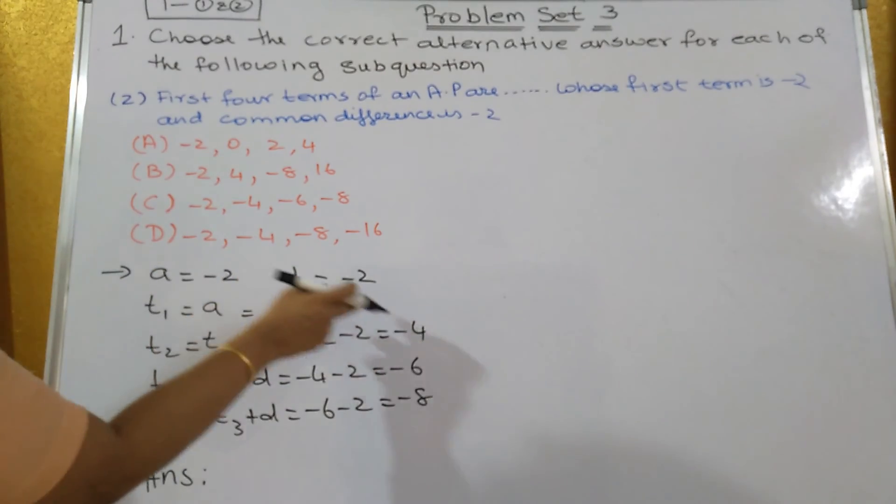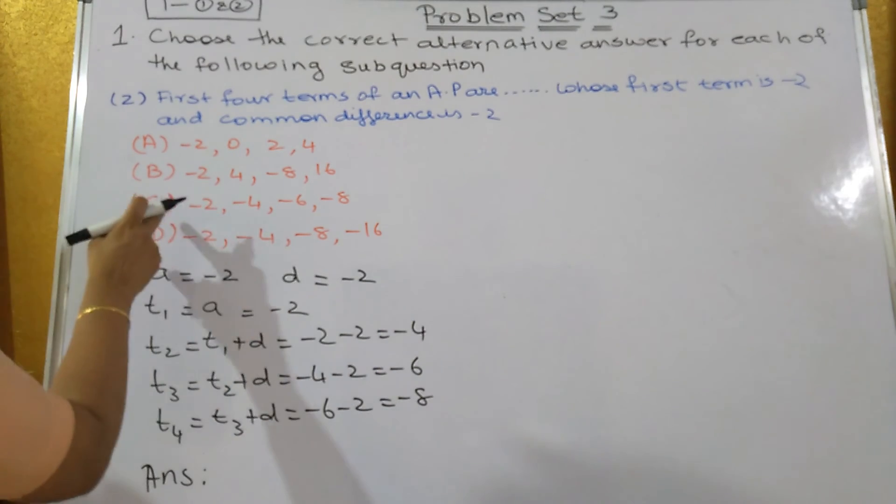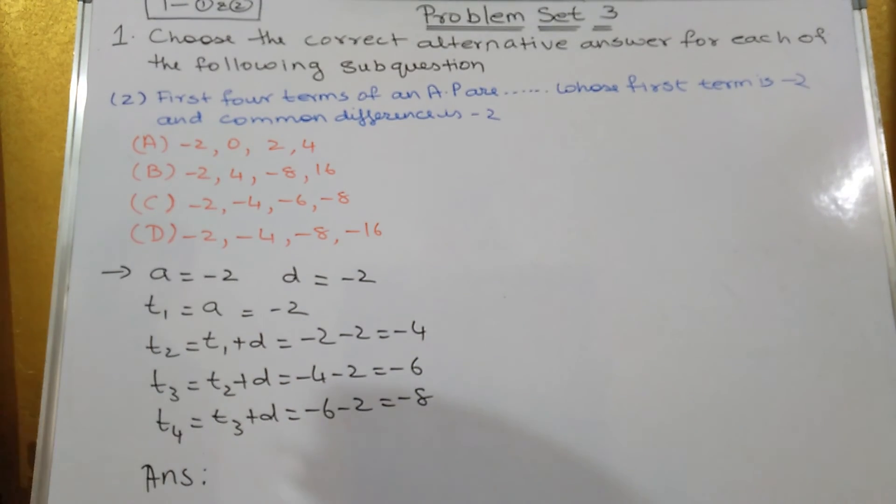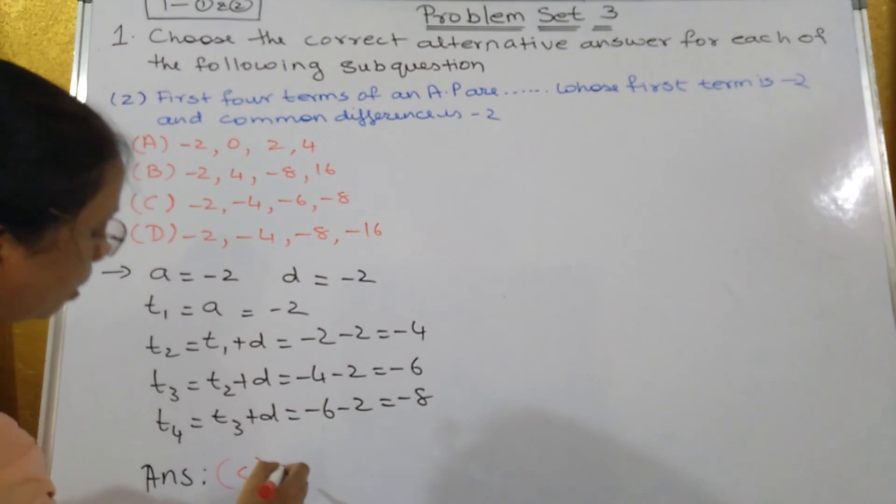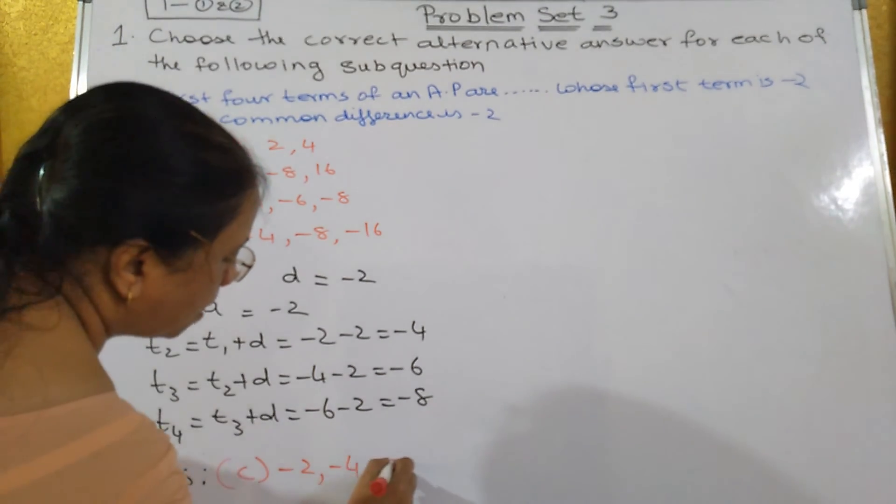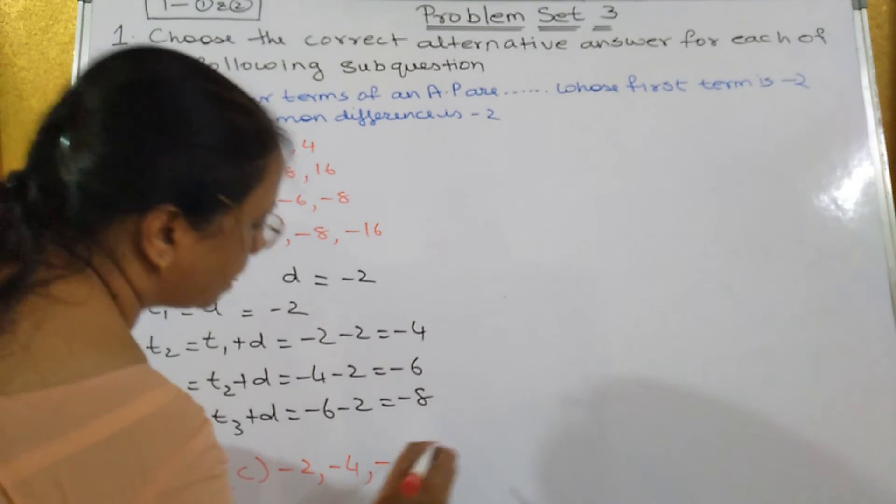So which is a correct answer? Minus 2, minus 4, minus 6, minus 8, that is C1. So option C is correct. That is what: minus 2, minus 4, minus 6, minus 8.